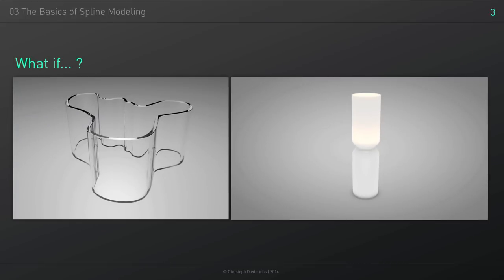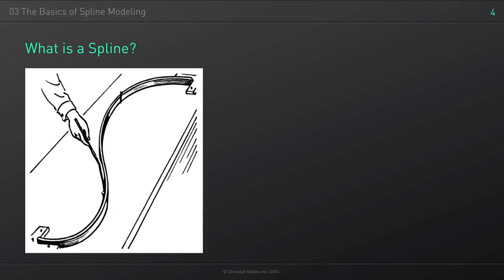So, spline modeling. For example, if we want to build something like a little bit organic-shaped, maybe non-uniform object, we can use a spline — or spline modeling — for that.